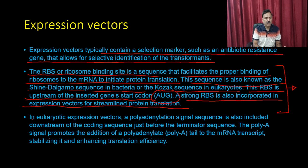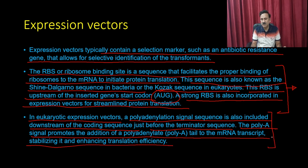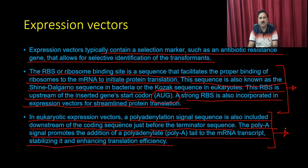In eukaryotic expression vectors, a polyadenylation sequence is included downstream of the coding sequence just before the termination sequence. The poly-A signal promotes addition of a poly-A tail to the mRNA transcript, stabilizing it and enhancing translational efficiency. This is a eukaryotic feature that enhances the life of the messenger RNA in the host cells.